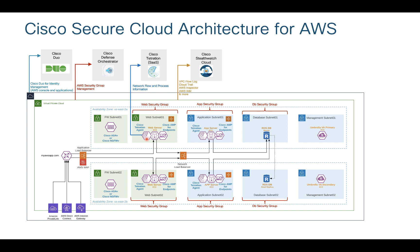Another important thing is Cisco StealthWatch Cloud, our cloud-based offering that gives you visibility of what is happening in your AWS environment. You can forward VPC flow logs, CloudTrail, AWS Inspector, AWS IAM, and many other services which can be integrated directly with Cisco StealthWatch Cloud. It provides complete visibility and information about compliance — for example, if you have stale access keys, that will trigger an alarm. If someone inside or outside your network is trying to initiate a port scan, you will get that visibility in StealthWatch Cloud.